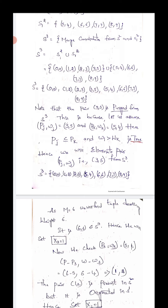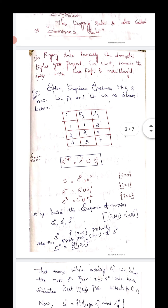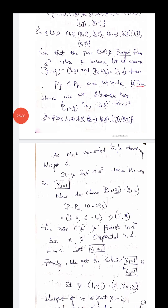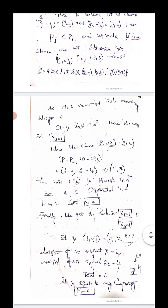After applying the purging rule, S^3 = {(0,0), (1,2), (2,3), (5,4), (6,6), (7,7), (8,9)}. Now we go back to the question: the bag capacity M = 6. We will find a tuple denoting weight 6. The tuple (6, 6) belongs to S^3.